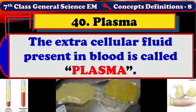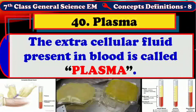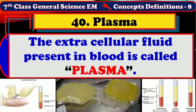The extracellular fluid present in blood is called plasma, or the fluid part of the blood is called plasma. Plasma exists in straw color or light amber color. It constitutes 55 to 60% of blood. Up to 95% of plasma is water, and the remaining 5% is constituted by organic and inorganic materials.